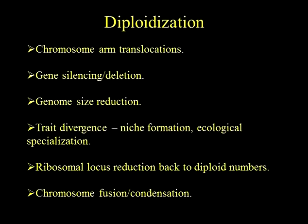Genome size reduction takes place. Polyploids have double the size of their parents in terms of genome size, and this is quite often reduced very quickly. Trait divergence happens once they become moderately successful — they have to form their own ecological niche and develop their own specializations relative to those of their parents. The ribosomal loci, like a lot of the repetitive parts of the genome, undergo a lot of changes, and the ribosomal genes go back down to diploid numbers quite quickly after formation of a polyploid. Chromosome fusions and condensations also take place, and this is really the focus of what I'd like to talk about in the rest of the talk today.